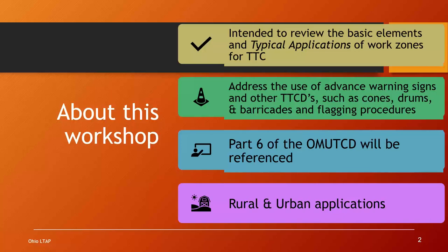You might want to remember that — it sounds like a quiz question. The manual is made up of nine different parts, and the part we're interested in is Part 6, which is called the Temporary Traffic Control Manual. Inside this Temporary Traffic Control Manual is all kinds of information about work zone traffic control. There's more than one way to say work zone traffic control — you can use these terms interchangeably: temporary traffic control, maintenance of traffic, or MOT.